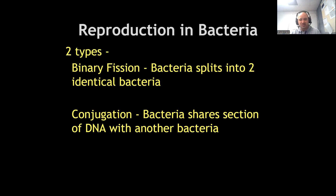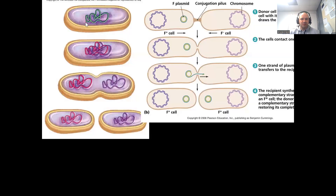Conjugation is used in genetic research when we use bacteria as test subjects. In a more concerning way, it's also how bacteria pass along certain harmful genes to each other. Here are the two pictures — binary fission on the left, and conjugation using a plasmid that sends genes over to another bacterium. Notice we're not creating new bacterial cells; we're just sharing genetic information with neighboring cells. That's a bacterial trait, not an animal one.